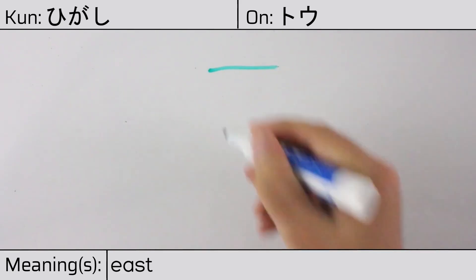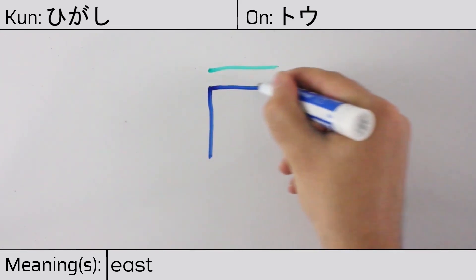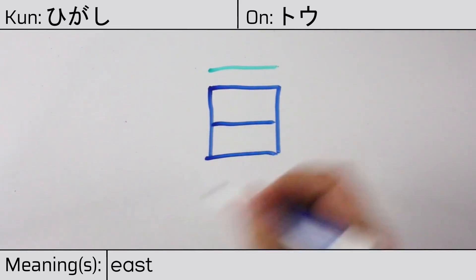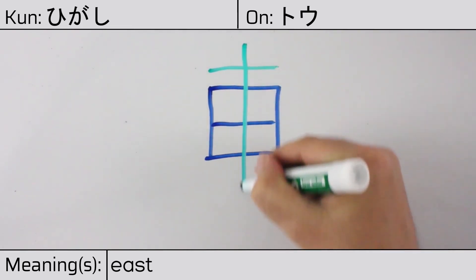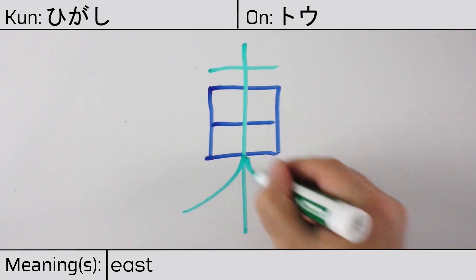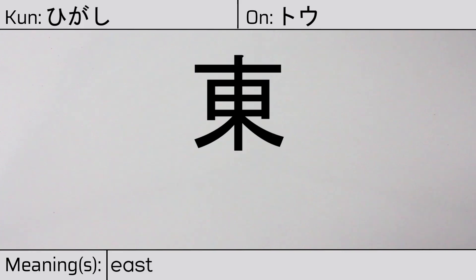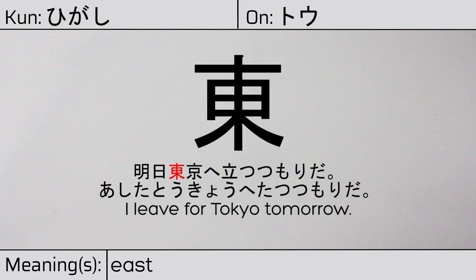This character is made up of the following radicals or parts: kanji ichi, followed by nishi or sun, and finally tree ki. You can remember this kanji by the following hint: sun rising behind the trees from the east. Our example sentence is: 明日東京へ立つつもりだ — I leave for Tokyo tomorrow.